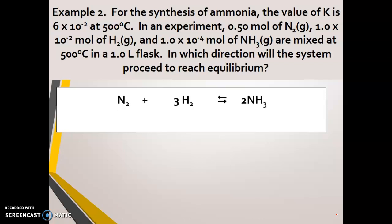So here is our balanced equation for the synthesis of ammonia. One mole of nitrogen, three moles of hydrogen form two moles of ammonia. And pulling the moles from the problem, I have those that just appeared here. And since it's in a one liter flask, the concentration is going to be equal to the moles.